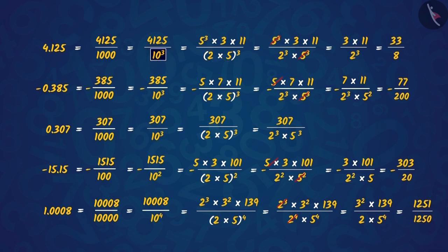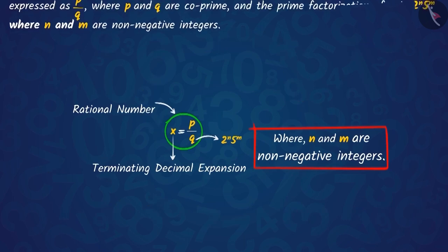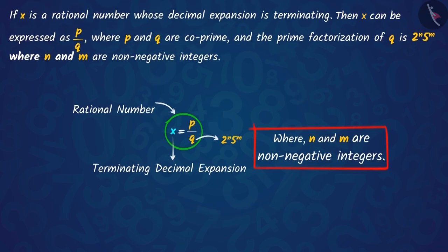So the powers of 10 will remain in the form of powers of 2 and 5. Based on this, we can say that if x is a rational number whose decimal expansion is terminating, then x can be expressed as P upon Q, where P and Q are co-prime, and the prime factorization of Q is 2 raised to the power n multiplied by 5 raised to the power m, where n and m are non-negative integers.